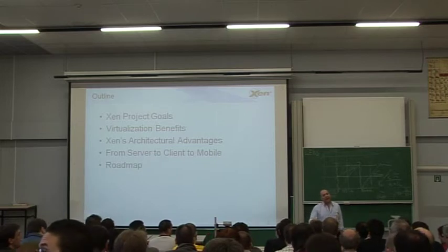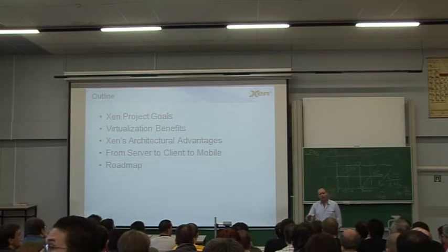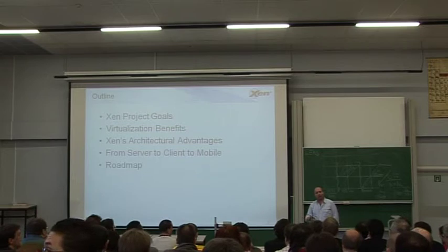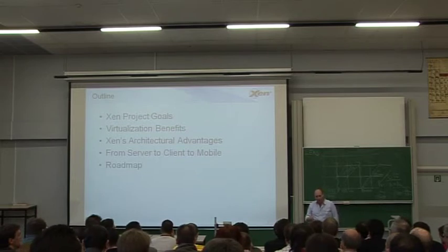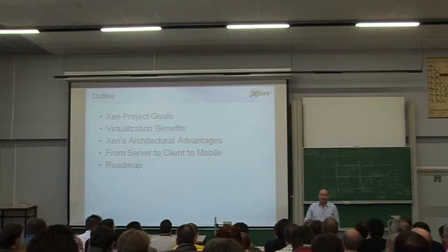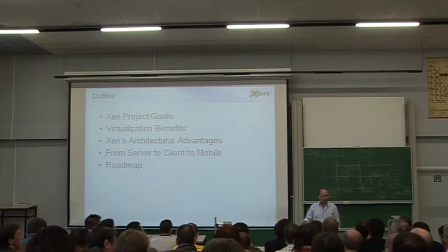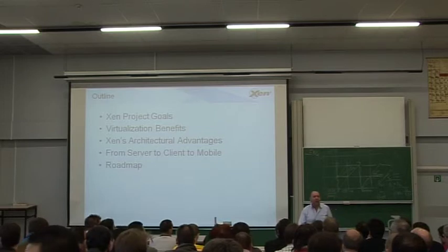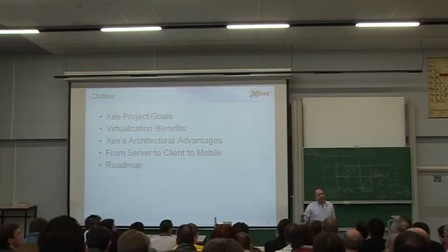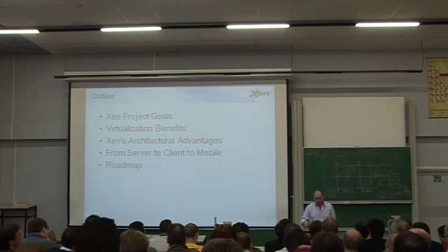We'll look at the architecture of Xen and what we regard as the architectural advantages that make Xen really well-suited for what we call ubiquitous virtualization — being deployed ubiquitously on hardware — and why we think it's got the best architecture for doing that. Then we'll look at some of the other projects taking Xen from servers onto client machines and even to mobile phones.